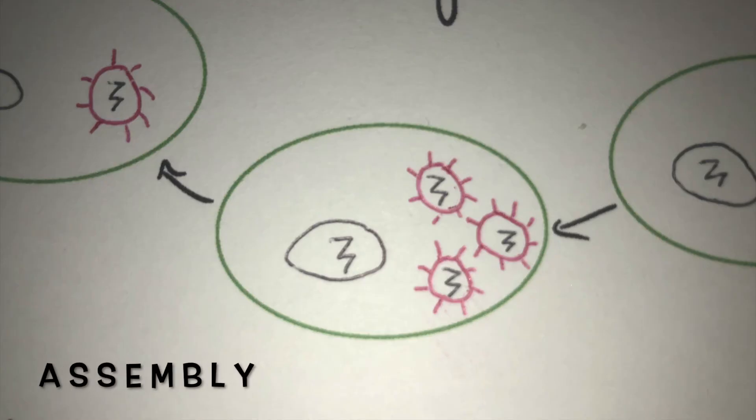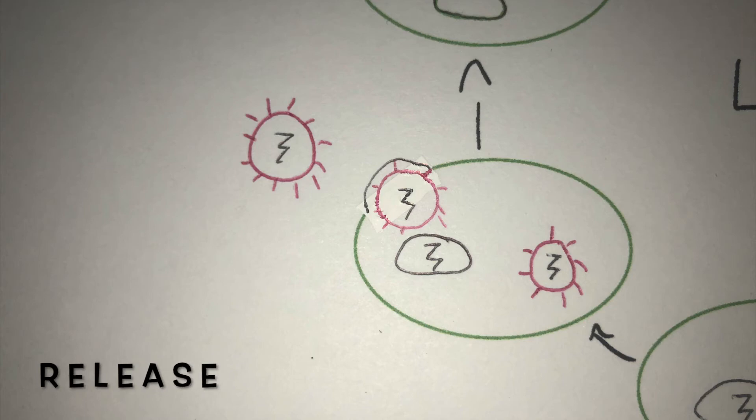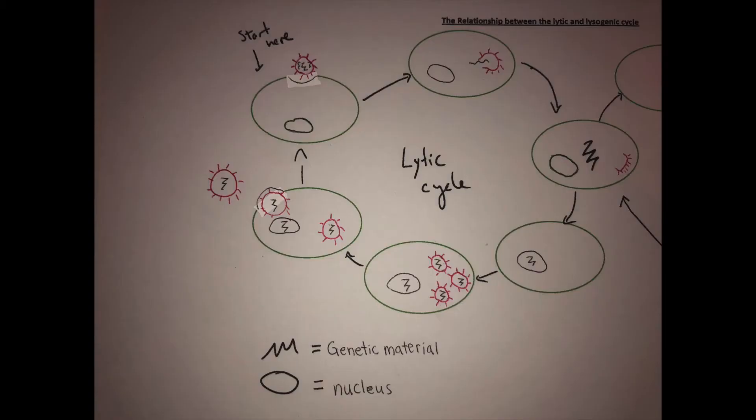The fifth stage is assembly, where new viruses are assembled. And the final stage is release, where the newly assembled viruses are released from the host cell to find and infect other cells. Those new viruses infect other cells and continue this process.